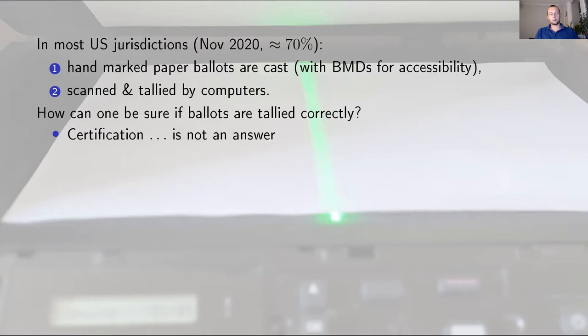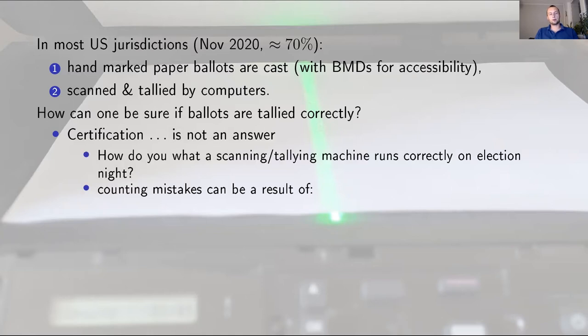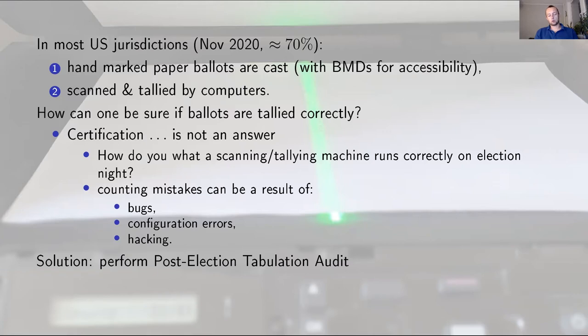Certification is, of course, not an answer, because what is important is we should focus our attention on evidence-based elections. So we should be interested in the correctness of results. We should also ask a question, if a scanning or tallying machine runs correctly on election night, not at the time when it was certified. Counting mistakes can have different sources. It can be bugs, configuration errors, or it can be a result of hacking. So what everyone should do is focus on performing post-election tabulation audits, and to do it even in a slightly better way to focus on risk limiting audits.